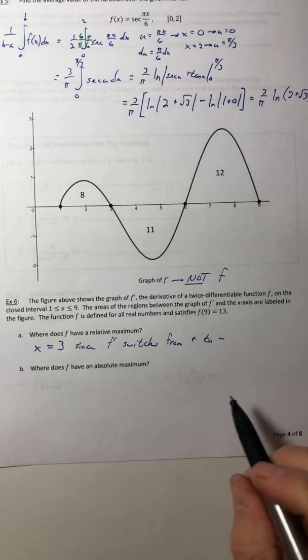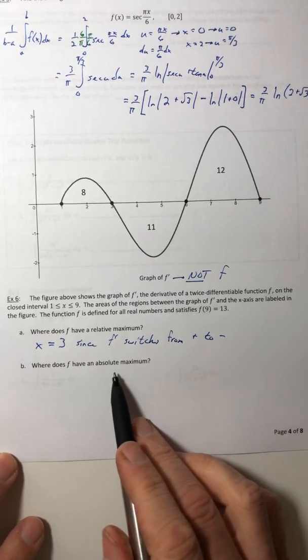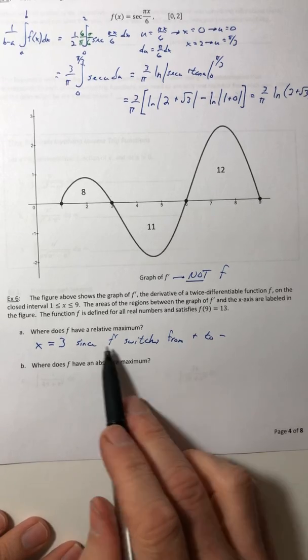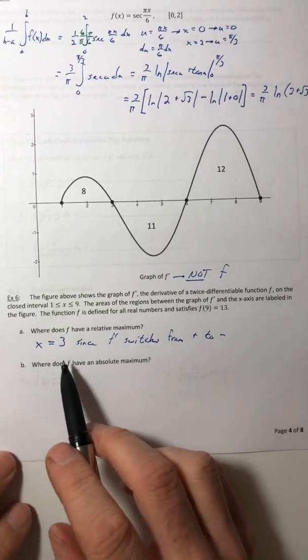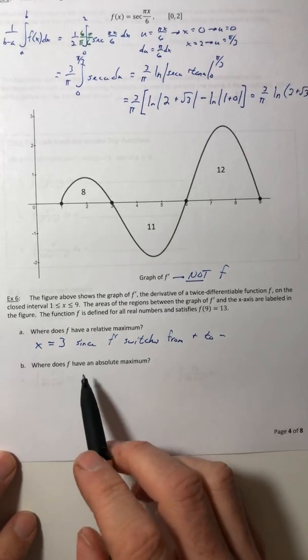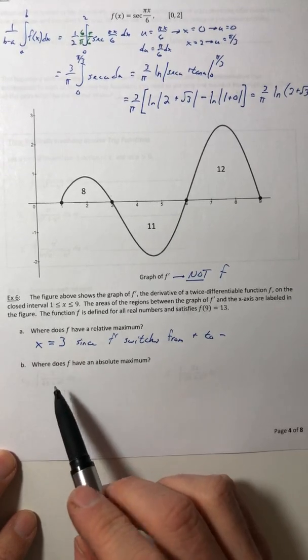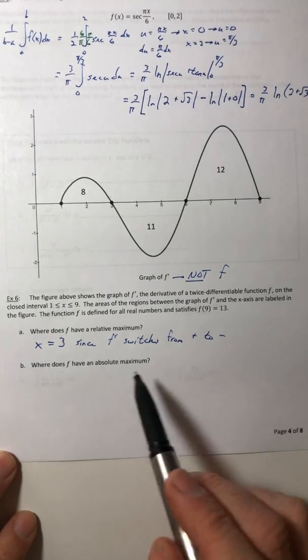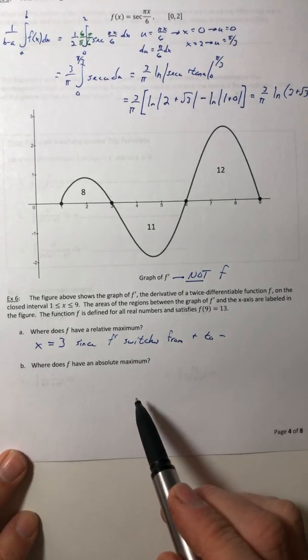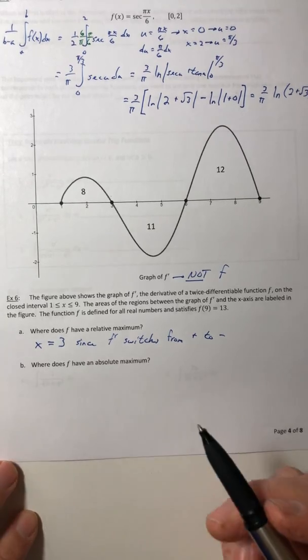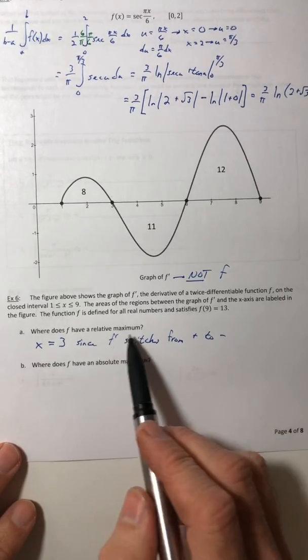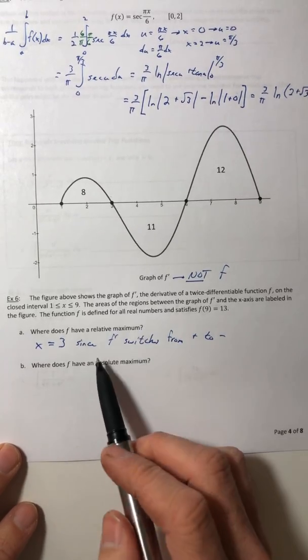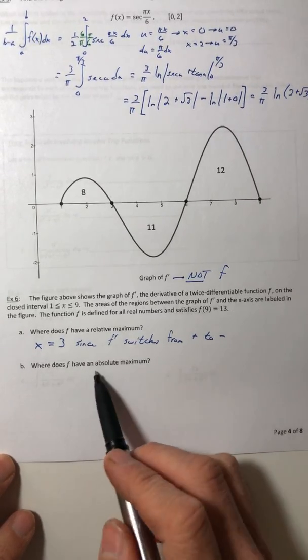Part B: Where does f have an absolute maximum? So not a relative but an absolute. To test for absolute extrema you have to test your critical numbers and then also test your endpoints into the original function. Now since it wants an absolute max, we don't need to worry about any other critical numbers like a relative min, because a relative min is never going to give you an absolute max.